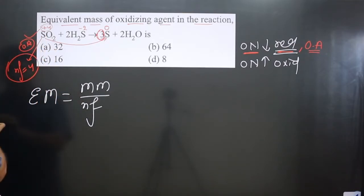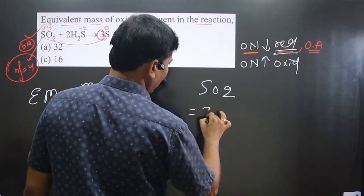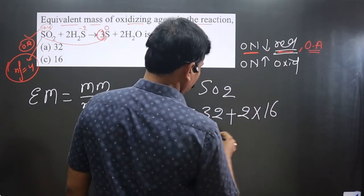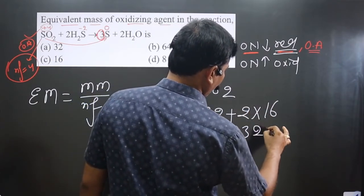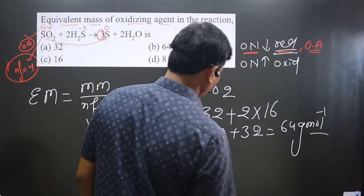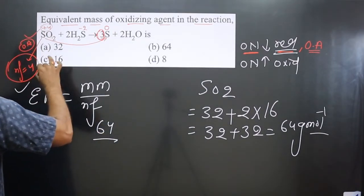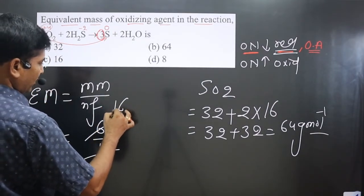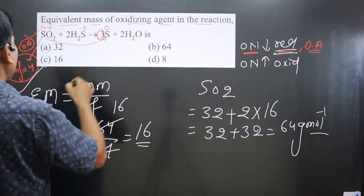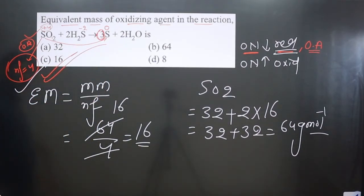Calculating the molar mass of SO₂ using the periodic table: sulfur has an atomic weight of 32, and there are two oxygen atoms each with atomic weight 16, giving 32 + 32 = 64 g/mol. Now, equivalent mass = molar mass / n-factor = 64 / 4 = 16 g/eq. The equivalent mass for SO₂ is 16, which corresponds to option C — the correct answer.